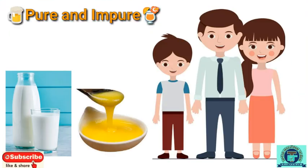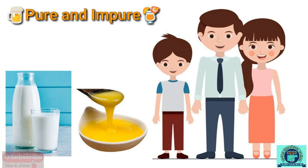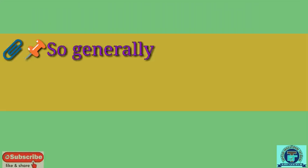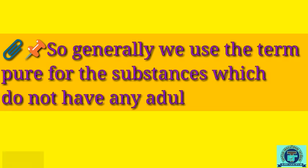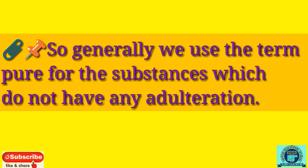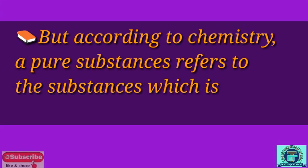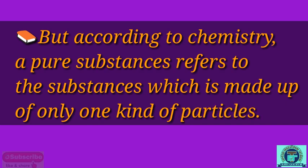In our daily life we often use the terms pure and impure. You might have heard your parents saying that the milkman is not giving pure milk, or that sweets are prepared in pure desi ghee. Here desi ghee is said to be in natural form with no adulteration. Generally we use the term pure for substances which do not have any adulteration. But according to chemistry, a pure substance refers to a substance made up of only one kind of particles.